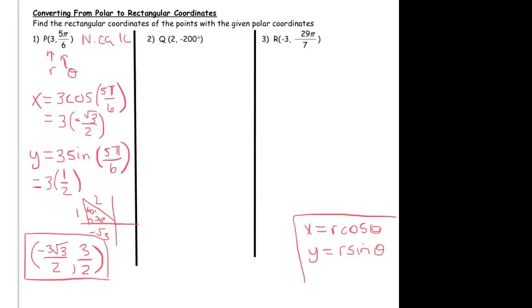The next one, we'll do the same thing. But we'll use a calculator. So, there's my r. There's my theta. So my x-coordinate is going to be 2 cosine of negative 200 degrees. And my y-coordinate is going to be 2 sine of negative 200 degrees.